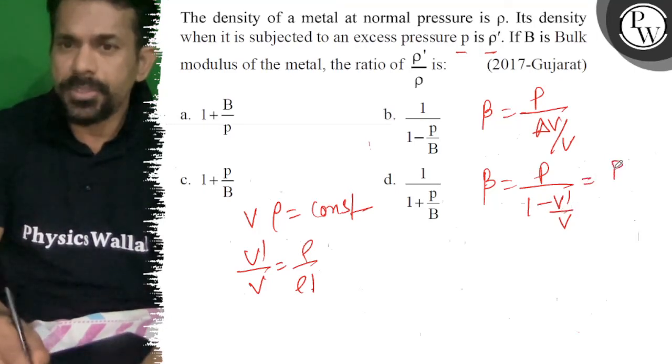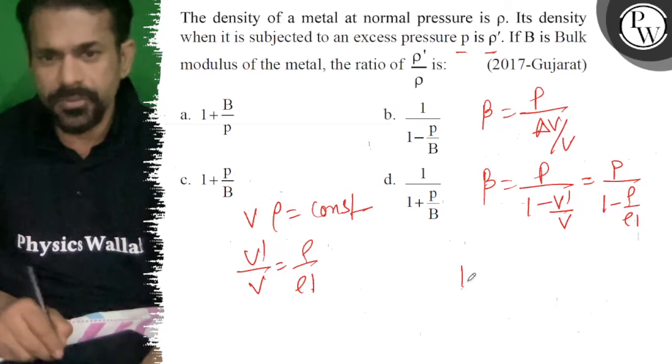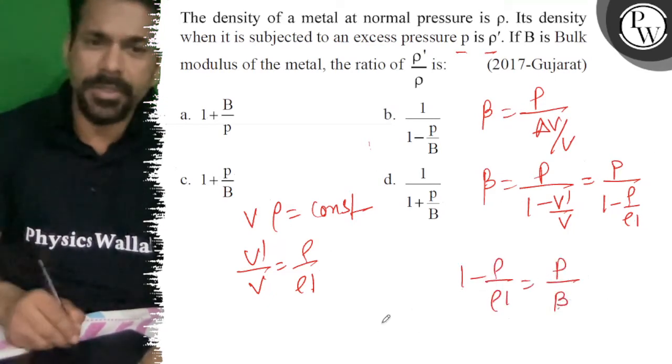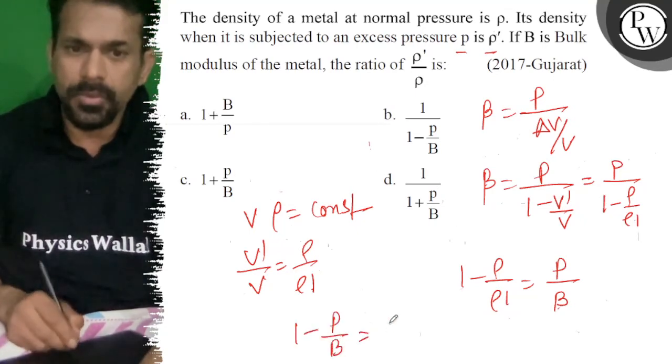That is pressure p upon 1 minus ρ by ρ dash. Changing the values, 1 minus ρ upon ρ dash is equal to p by β. 1 minus p upon β is equal to ρ upon ρ dash.